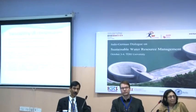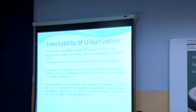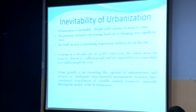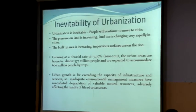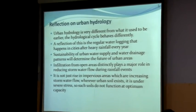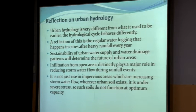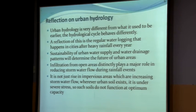We have impervious surfaces. The point is not just that we have more impervious surfaces but it is also the condition of the so-called pervious surface or the open areas where we have vegetation. We see that even as far as the open spaces are concerned, the urban hydrology is getting affected, and that is something we see with the reflection of the regular water logging that happens in cities after heavy rainfall.